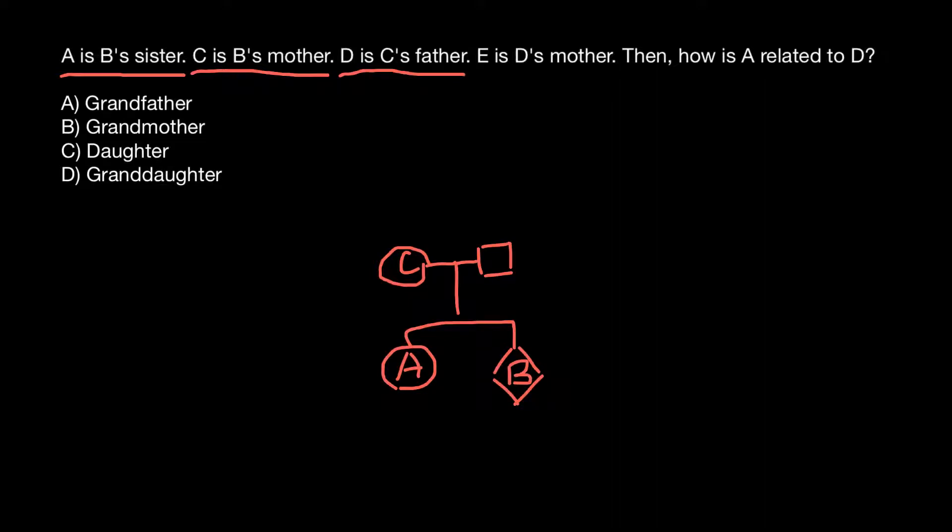And what else do we know? D is C's father, so D is C's father. This person is D.